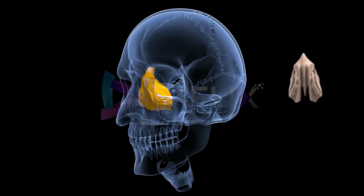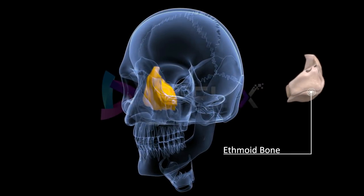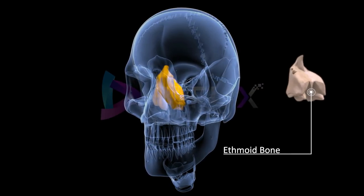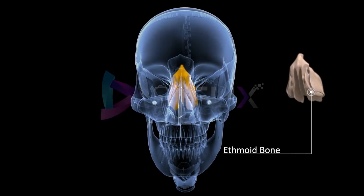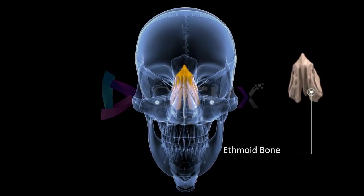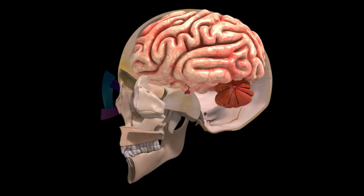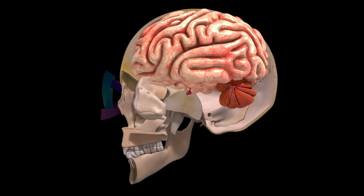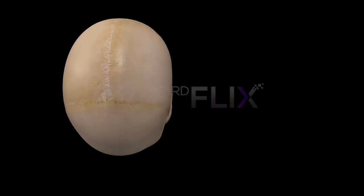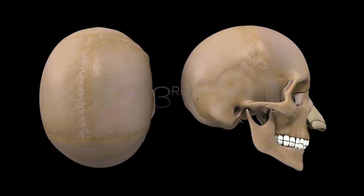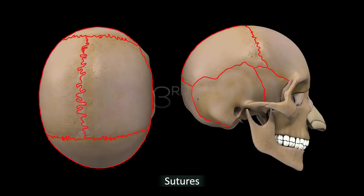Ethmoid bone: It is present on the midline of the anterior part of the cranial floor, between the two orbits. It separates the nasal cavity from the brain. The cranial bones articulate with one another by immovable interdigitating joints, called sutures.